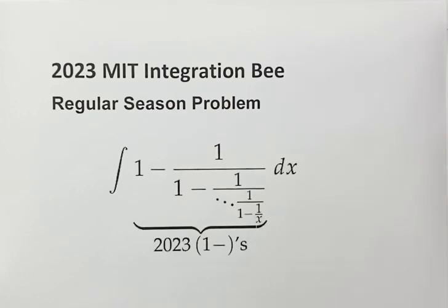In this video we will be evaluating the integral from the 2023 MIT Integration Bee. Now let's look at the question. Inside the integral we have 1 minus 1 over 1 minus, and so on. Totally there are 2023 one minuses.